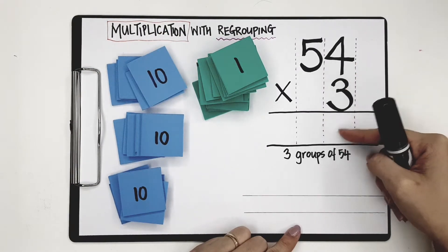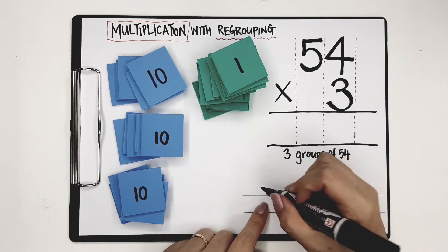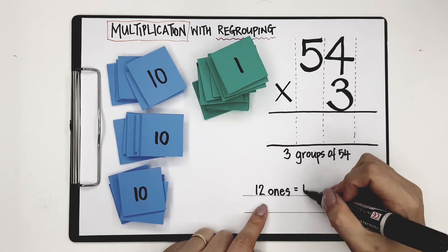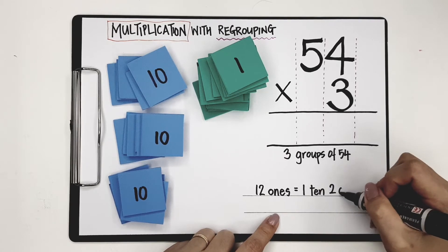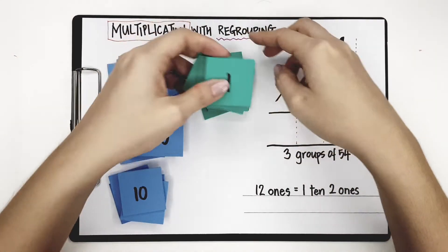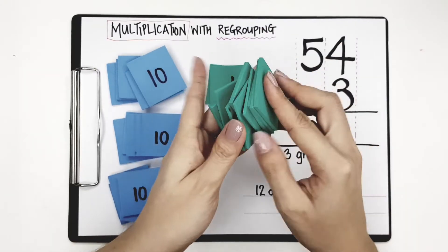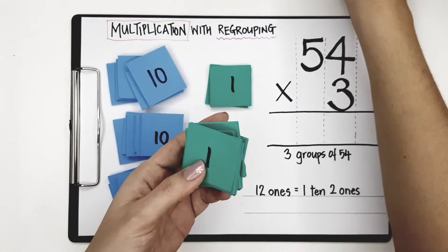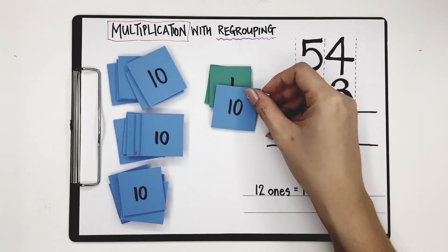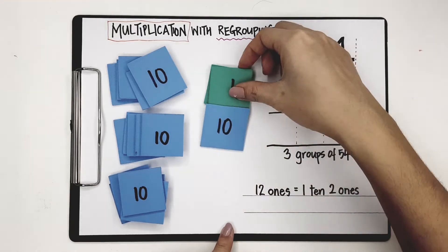Now can I write 12 here? No, because I need to regroup. I have 12 ones, and 12 ones can be regrouped as 1 ten and 2 ones. Every 10 ones can be regrouped as 1 ten. So instead of calling it 12 ones, I have called it 1 ten and 2 ones.